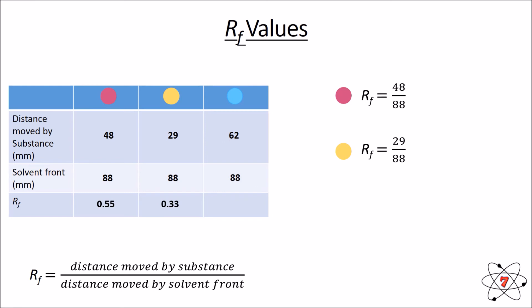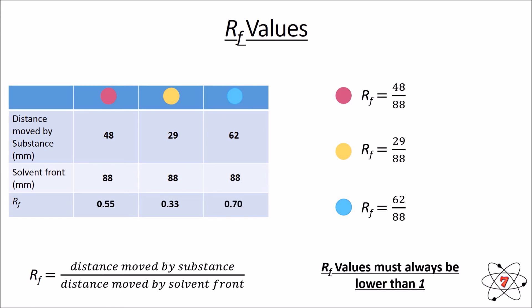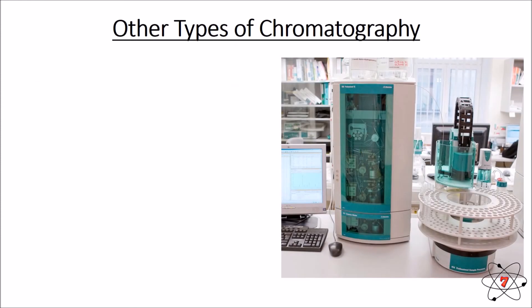Note that there is no unit for an RF value — it is just a number. For the blue dye: 62 ÷ 88 = RF value of 0.70. RF values must always be lower than one. If you have an RF value greater than one, you have done something incorrect. The reason is that the dye cannot move further than the solvent front.